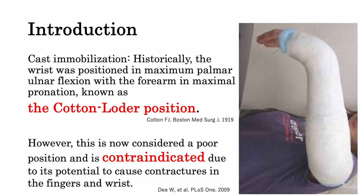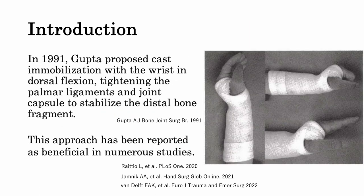Regarding cast immobilization: historically, the wrist was positioned in maximum palmar ulnar flexion with the forearm in maximal pronation, known as the Cotton-Loader position. However, this is now considered a poor position and is contraindicated due to its potential to cause contracture in the fingers and wrist. In 1991, Gupta proposed cast immobilization with the wrist in dorsal flexion, tightening the palmar ligament and joint capsule to stabilize the distal bone fragment. This approach has been reported as beneficial in numerous studies.